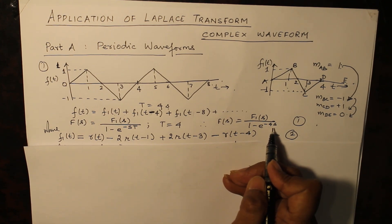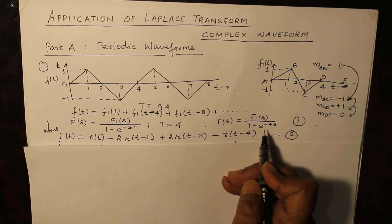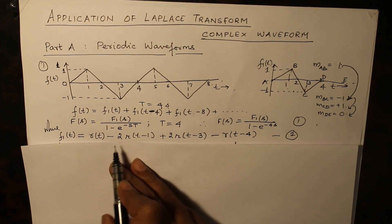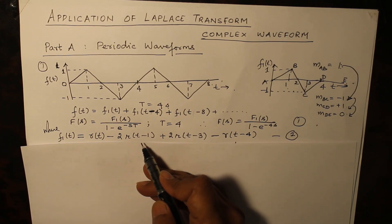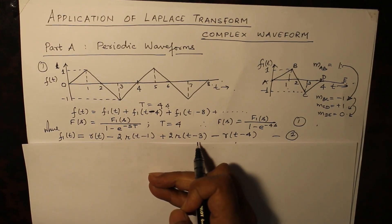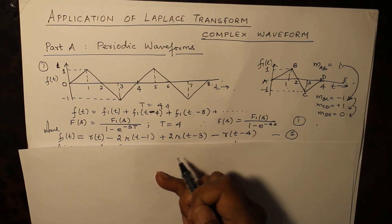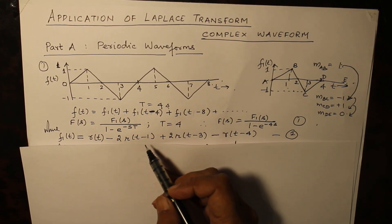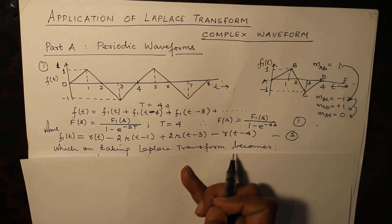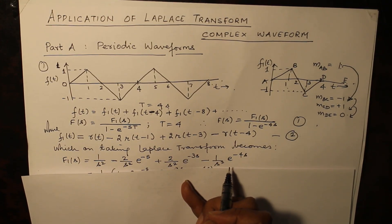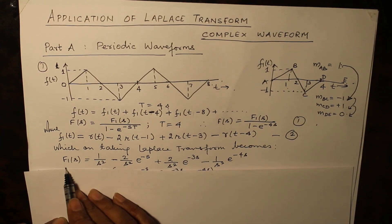Now let's take the Laplace transform of f1(t). As you know, Laplace transform of r(t) is 1 over s squared. Using the shifting property, because of the terms r(t-1), r(t-3), and r(t-4), we will have terms of e raised to the power minus s, e raised to the power minus 3s, and e raised to the power minus 4s, which will give you this expression.